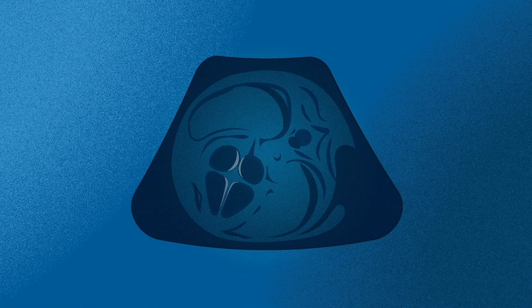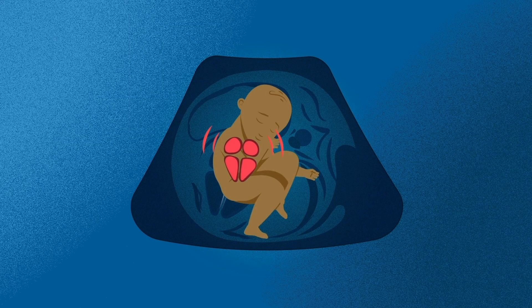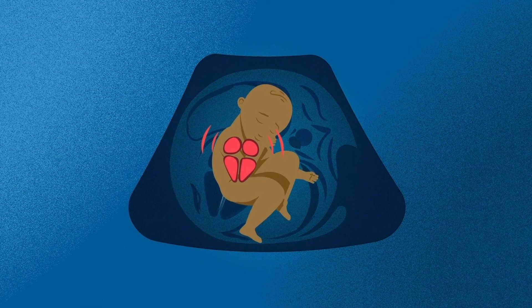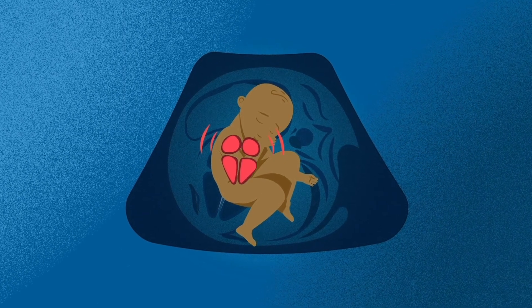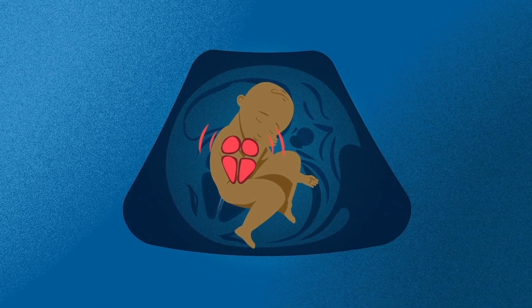We can also see the walls that separate the right and left sides of the heart, the fetal heart rate and rhythm, and the size and position of the heart in the baby's chest. This allows us to detect heart defects and evaluate the baby's heart function.